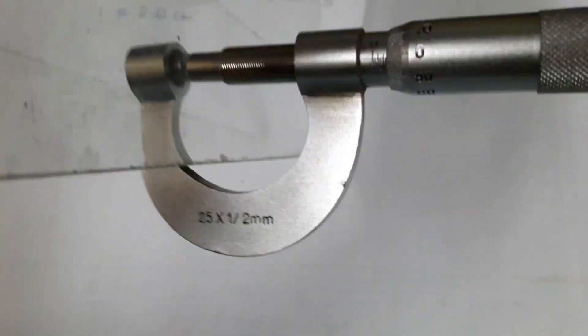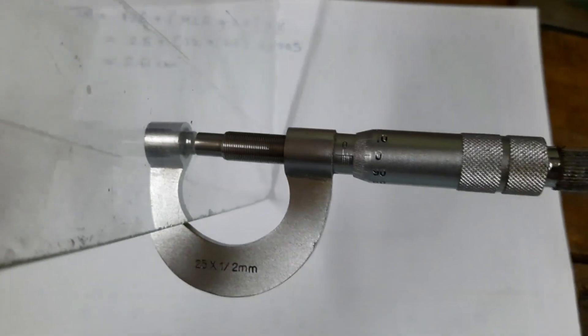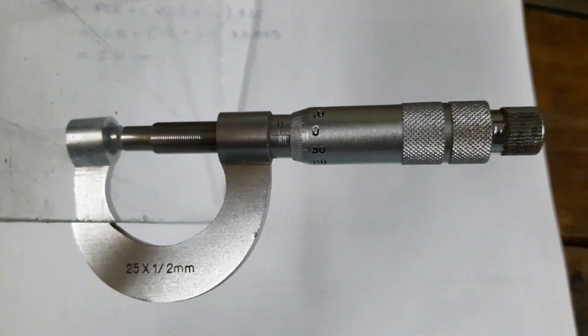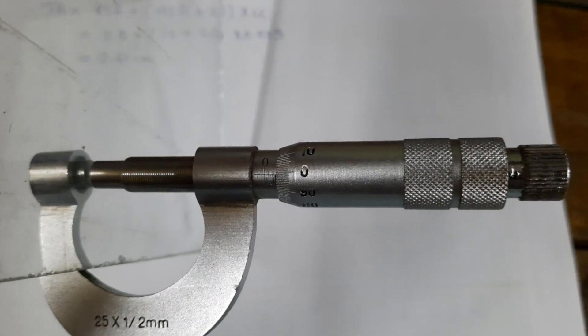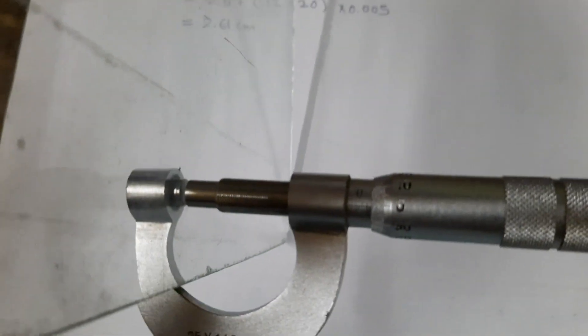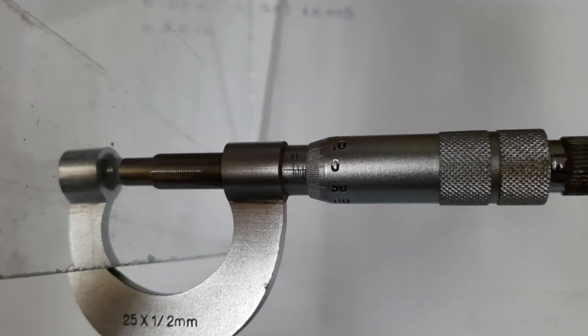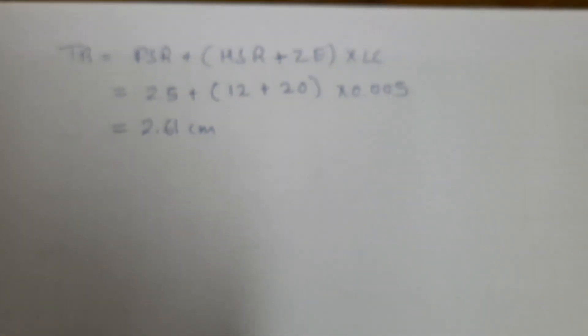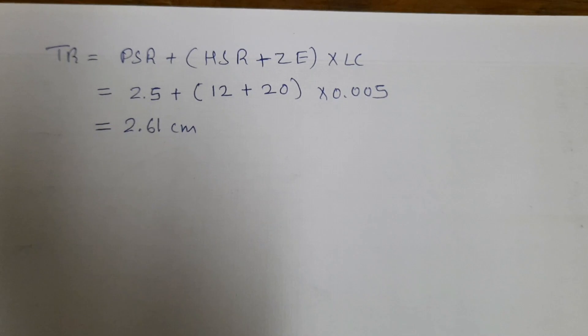Hold the screw gauge and keep the glass between the two jaws, then note the reading. The pitch scale reading (PSR) is about 2.5, and the head scale reading is about 12. With zeroth error 20 and the known least count, calculate the total reading to get the thickness of the glass. Repeat this for the other two glasses.